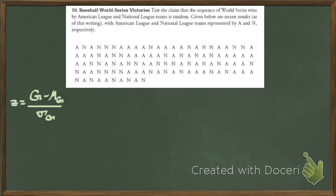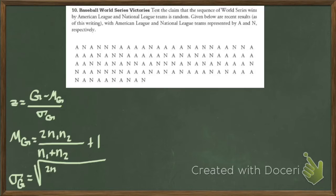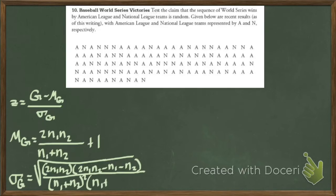So I'm assuming that our N1, the number of American wins, is going to be bigger than 20, meaning that we're going to have to convert these to Z scores, and the Z score is going to have to have a mu G, which is that guy, and a standard deviation G, which is that guy. You can find those in your book.